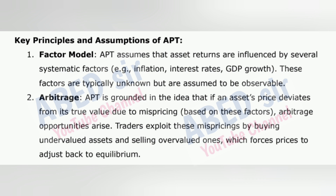Key principles and assumptions of APT: 1. Factor model — APT assumes that asset returns are influenced by several systematic factors such as inflation, interest rates, and GDP growth. These factors are typically unknown but are assumed to be observable. 2. Arbitrage — APT is grounded in the idea that if an asset's price deviates from its true value due to mispricing based on these factors, arbitrage opportunities arise. Traders exploit these mispricings by buying undervalued assets and selling overvalued ones, which forces prices to adjust back to equilibrium.